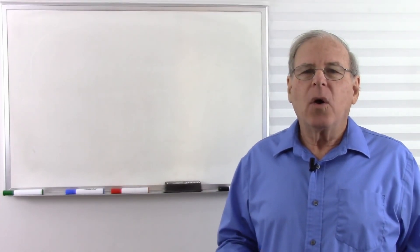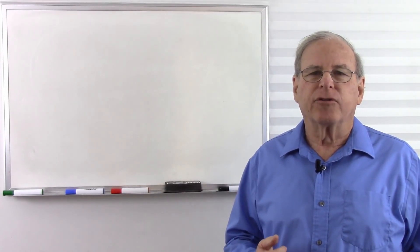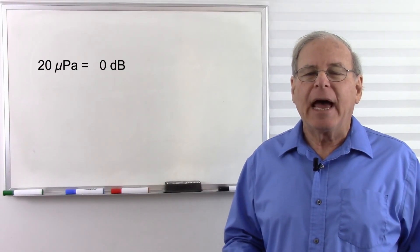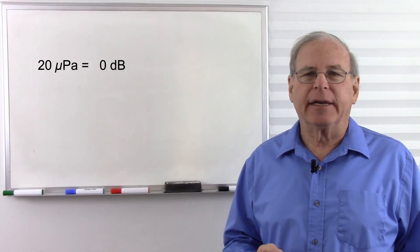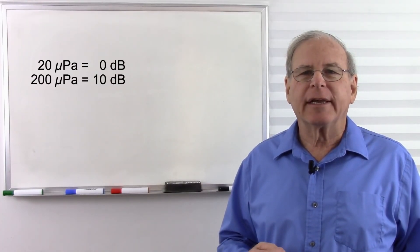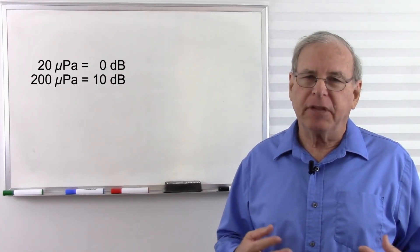So how do we do that? We start with the threshold of hearing, which is 20 micropascals, and call that zero. Now, we multiply that 20 micropascals by 10, but instead of calling that 200 micropascals, we call it 10 decibels.